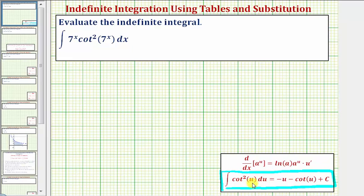For our example, we'll let u be equal to the exponential seven raised to the power of x. So if u equals seven raised to the power of x, the next step is to find differential u.